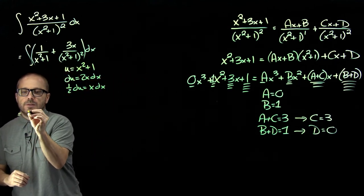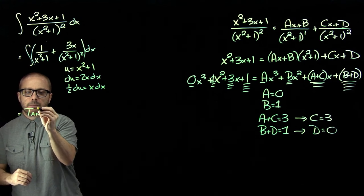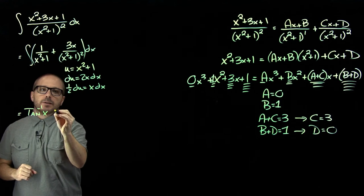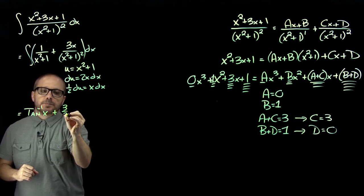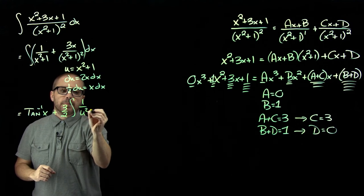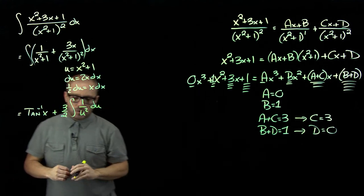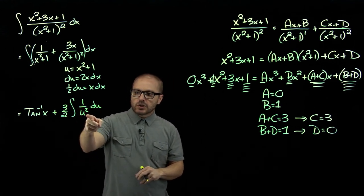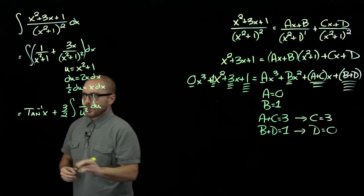So the first expression, I know how to do that. It's just tan inverse. And then when I do the u sub here, we're going to be left with just that integral. Tan inverse plus this integral here. And now, this is just power rule. That's negative one over u.